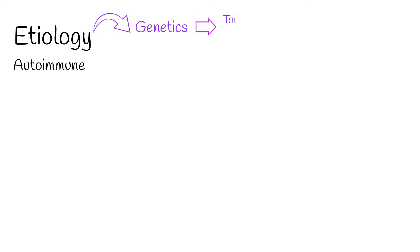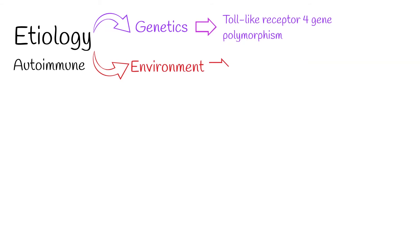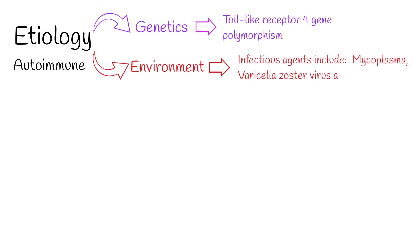The exact etiology of the disease is not known, but it has an autoimmune basis. Genetics has the biggest associations, especially with Toll-like receptor 4 gene polymorphism. Smoking and several infections also have some association with giant cell arteritis. These infectious agents include mycoplasma, varicella-zoster virus, and herpes virus.